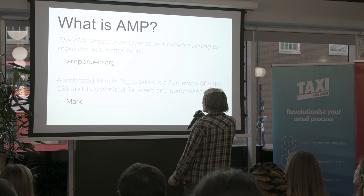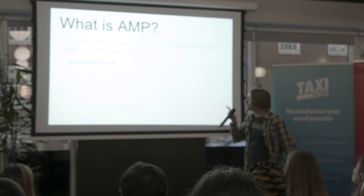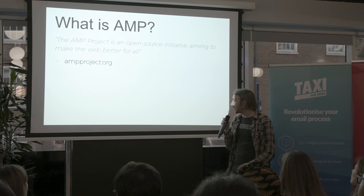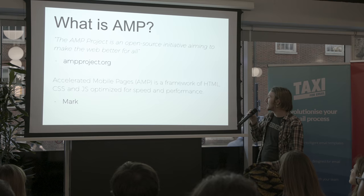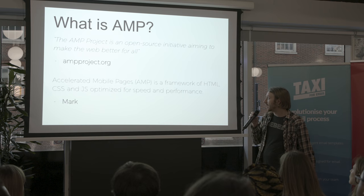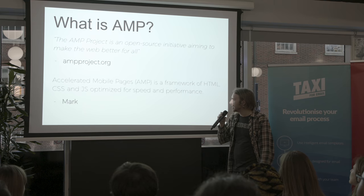So first off, what is AMP? That's the definition from the ampproject.org website. They say it's an open source initiative aiming to make the web better for all — it's not very descriptive. AMP stands for accelerated mobile pages, it's a framework optimized for speed and performance. It started off for mobile web, and it's sort of grown from there — people use it on desktop web, and now it's coming into email.